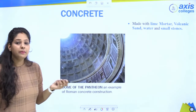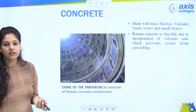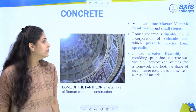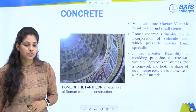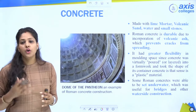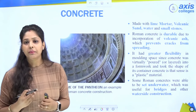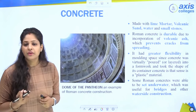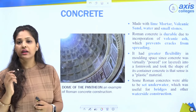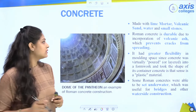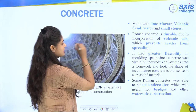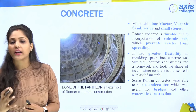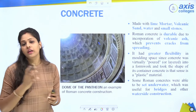Concrete was made with lime mortar, volcanic sand, water, and sandstone. Roman concrete was very durable because of the volcanic ash in the mix. The volcanic ash prevented cracks from spreading — if a crack appeared, it would not propagate. This gave the concrete great resilience and flexibility in molding, which was essential when constructing domes and arches.